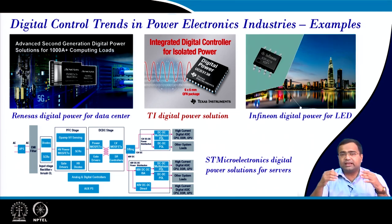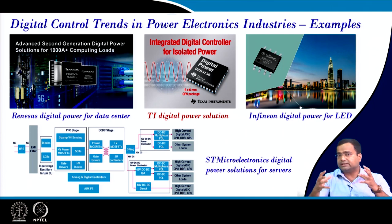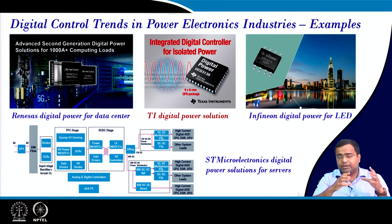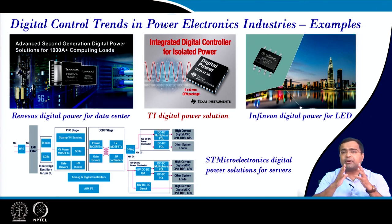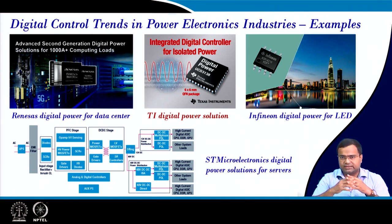Another example I am showing is the Infineon digital power for LED driving application. For street LED driving or LED TVs, starting from AC then DC — because LED is a DC load — you can take the Infineon digital power solution with a power factor corrector followed by LLC and other architectures for LED driving. These are a few examples of the large amount of digital power solutions in power electronics industry, and slowly most industries are going for digital control.